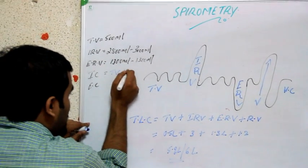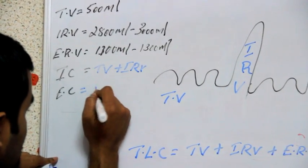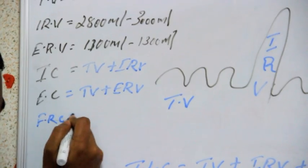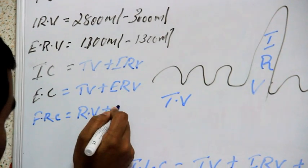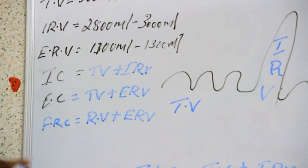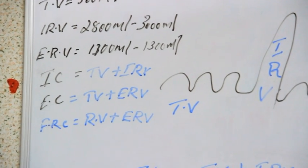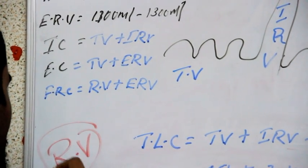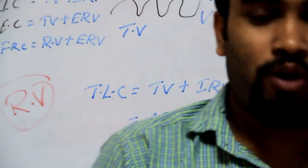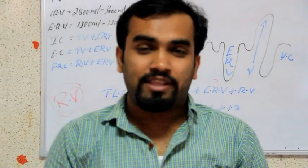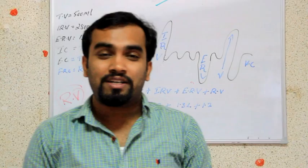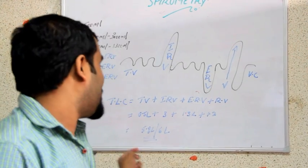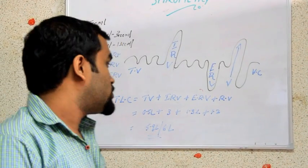Let's review what we have learned. We found TV, IRV, ERV, and vital capacity. Inspiratory capacity is TV plus IRV; expiratory capacity is TV plus ERV; functional residual capacity is RV plus ERV. Never forget residual volume — you can't give your residual volume to anyone, because removing it means killing yourself.